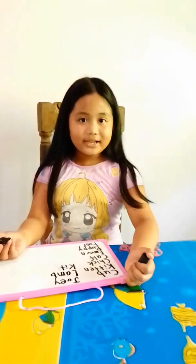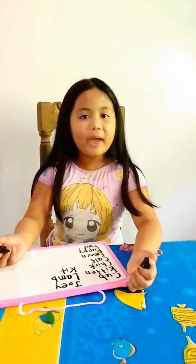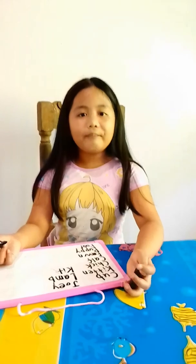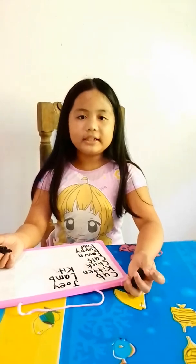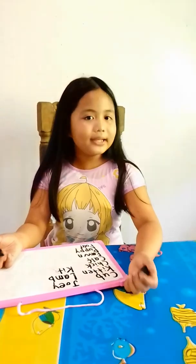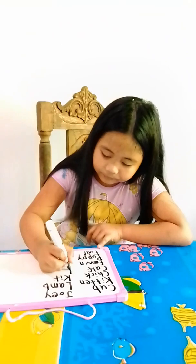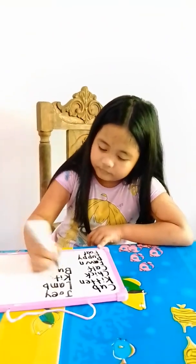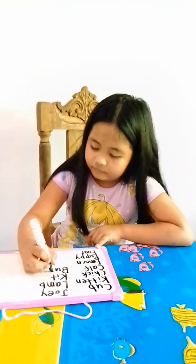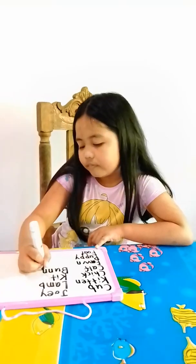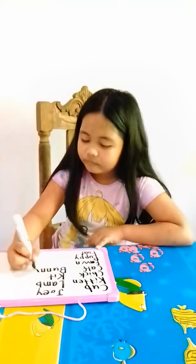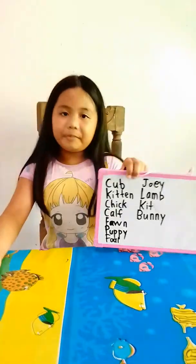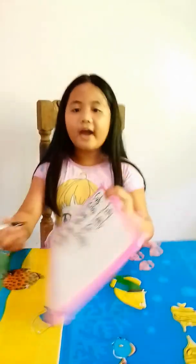What is the baby of a rabbit? The baby of a rabbit is a bunny. The spelling is B-U-N-N-Y.